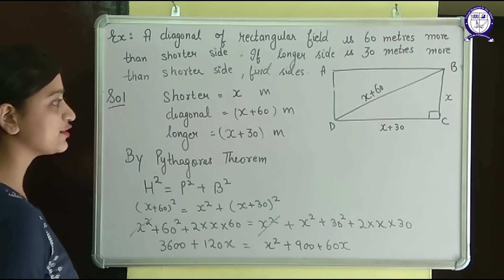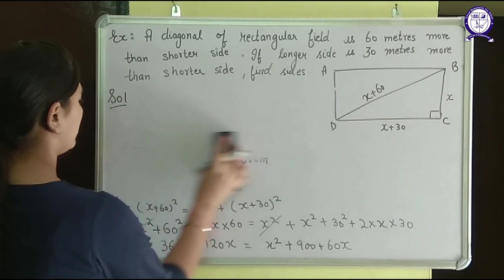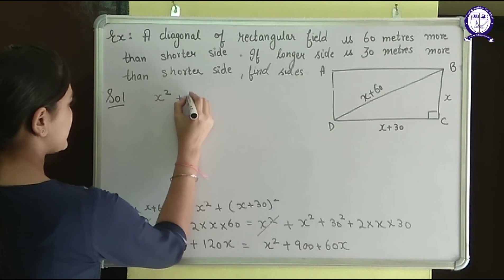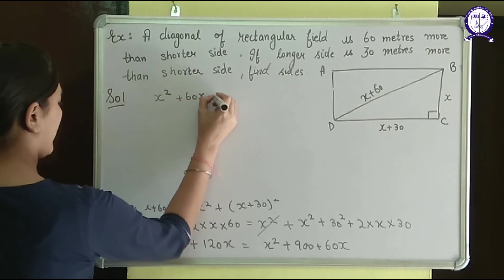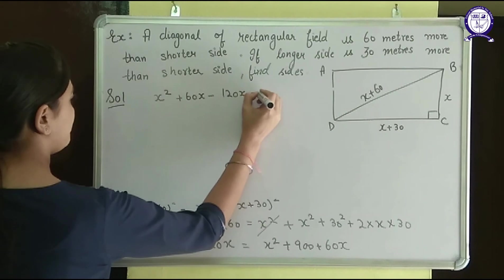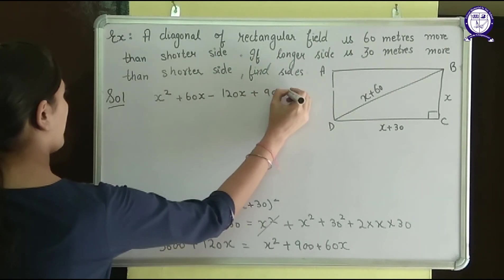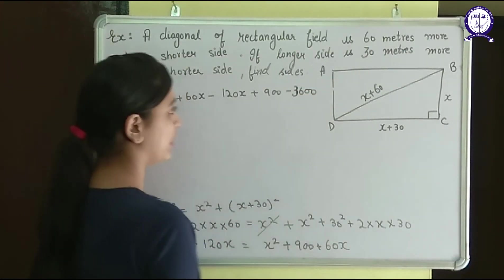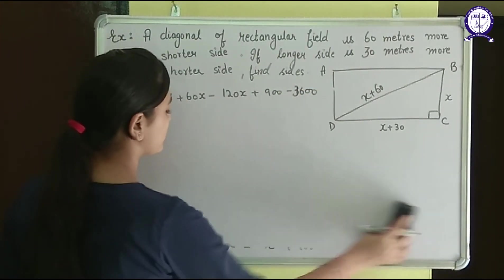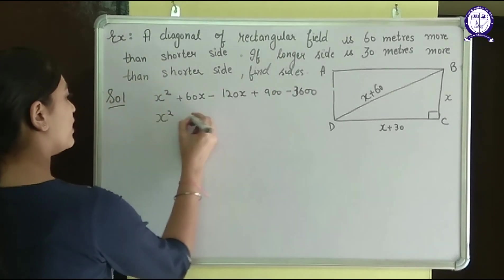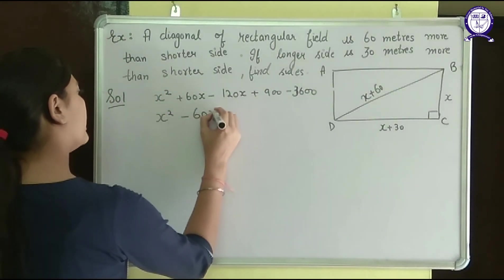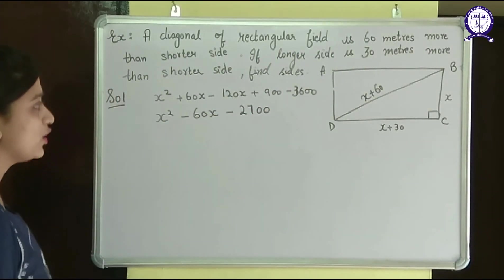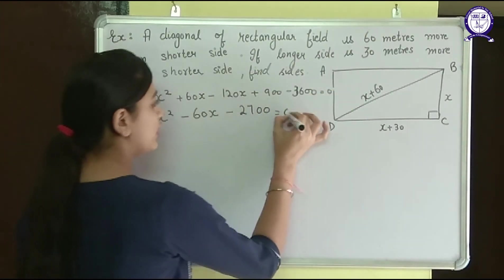Rearranging the equation by taking all terms to one side: x squared plus 60x minus 120x plus 900 minus 3600 equals 0, which simplifies to x squared minus 60x minus 2700 equals 0. This is the quadratic equation and I need to find the value of x.